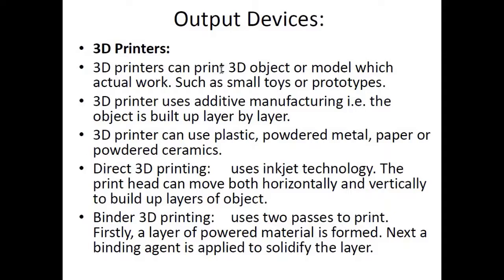In binder 3D printing, it uses two phases to print. First, one layer of powdered metal, powdered plastic, or powdered ceramic is sprayed, and then on top of it a binding agent or glue is sprayed so that the layer solidifies. On top of that a second layer of powdered raw material is sprinkled, then the glue, then another layer of raw material, then the binding agent, and so on until the whole model is finished.